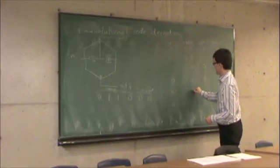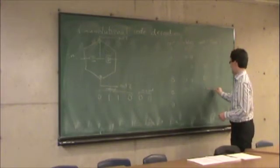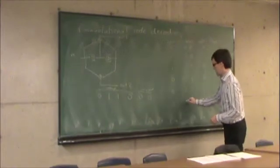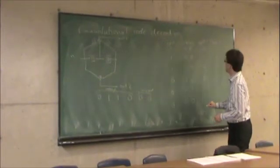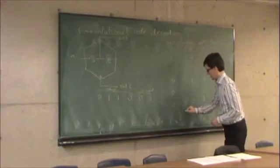My next state is 0, 1. My first output is 1, second output is 1. Next state is 0, 0. Output 1 is 0, output 2 is 0 and my final state is 0.